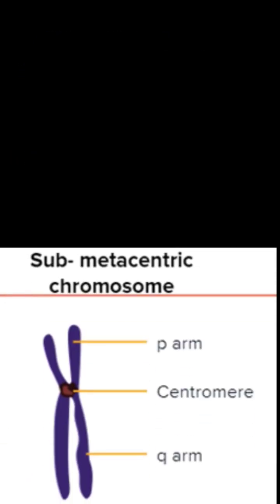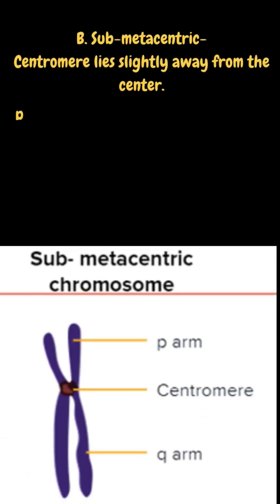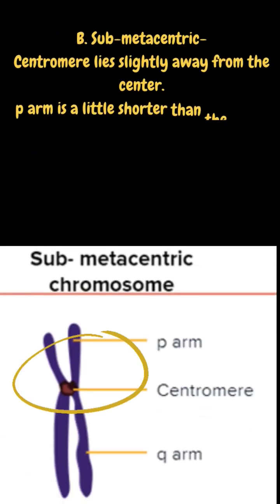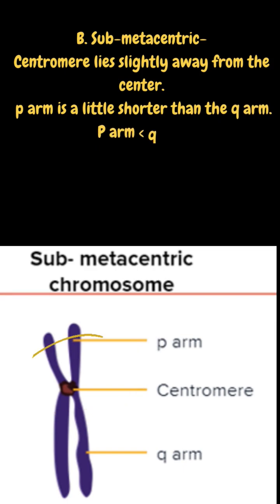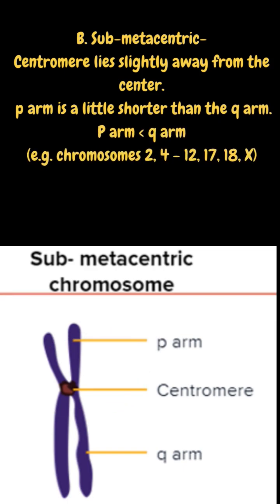Second type is Submetacentric. The position of the Centromere is little away from the center, and the P arm is shorter than the Q arm.